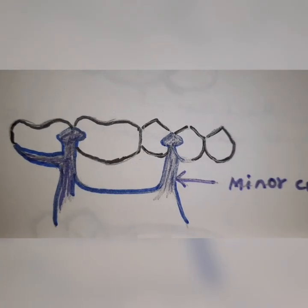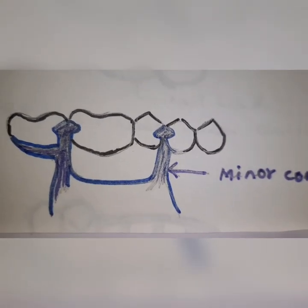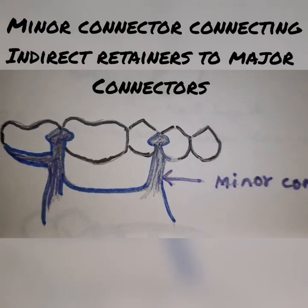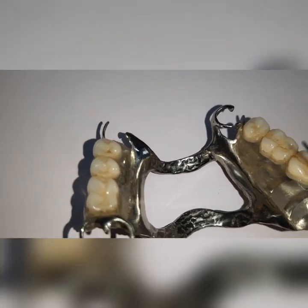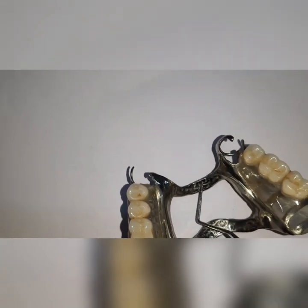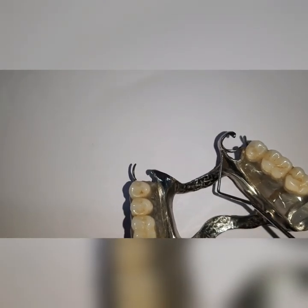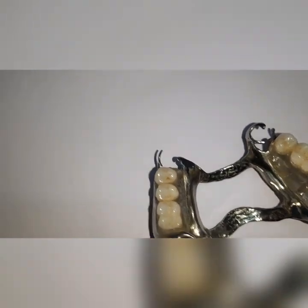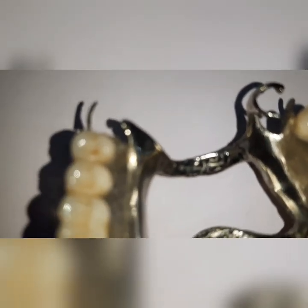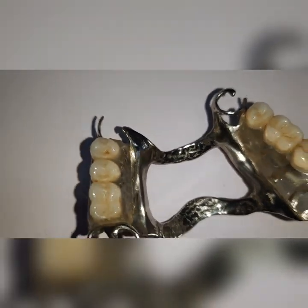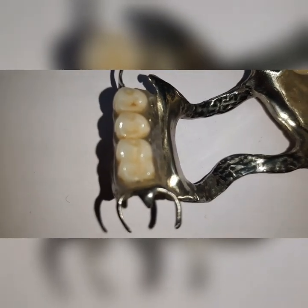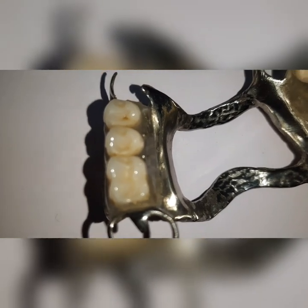It is always placed in the embrasure area. Another type of minor connector consists of those that connect the indirect retainers to the major connector. You can see here: this is the indirect retainer, this is the minor connector connecting to the major connector. They should connect at right angles, but the junction should be rounded. It is designed to lie in the embrasure space between the teeth so that it disguises the bulk.